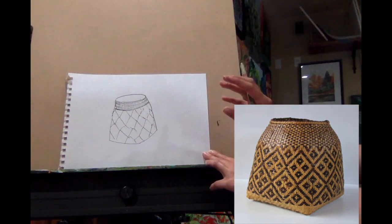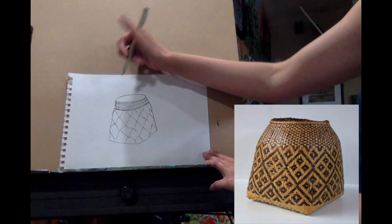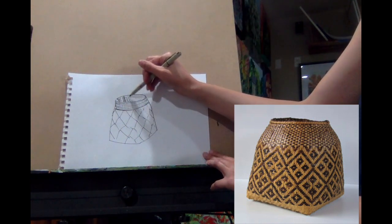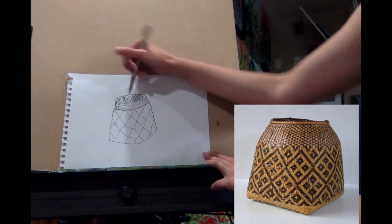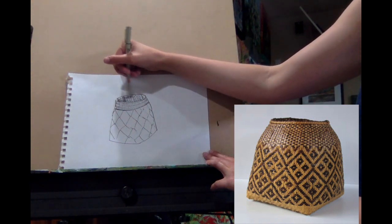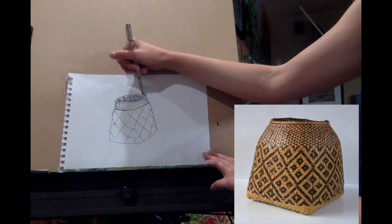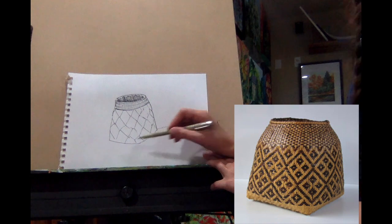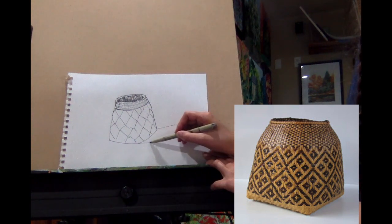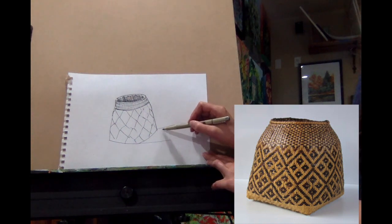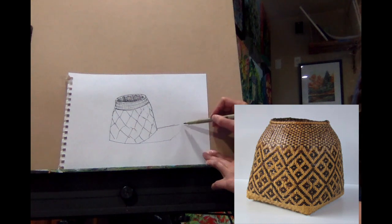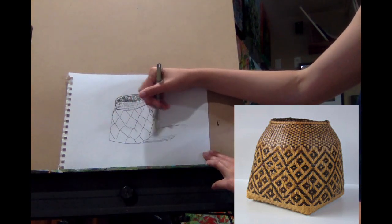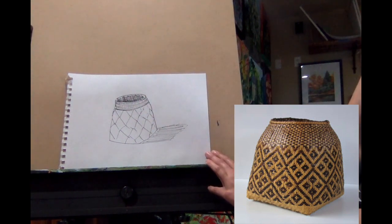So now we have a really nice, interesting basket shape. Notice the inside is very dark, so we need to go in, continue our mark making, and get that area nice and dark like that. And then let's add a little bit of a cast shadow off to the side here. And I'm going to fill that in with our marks.